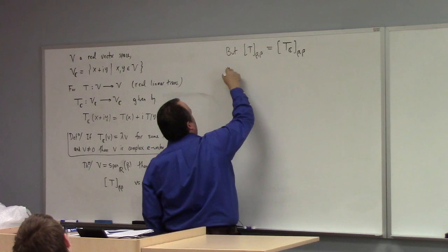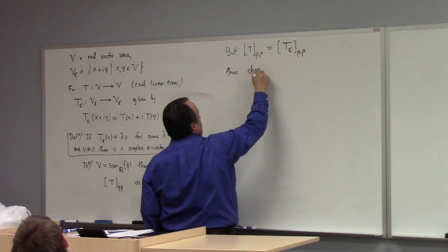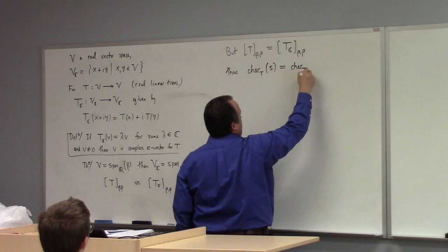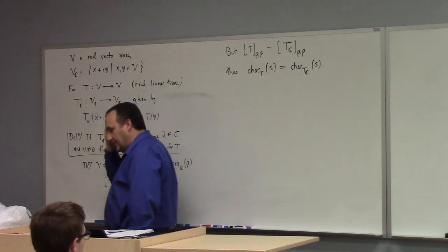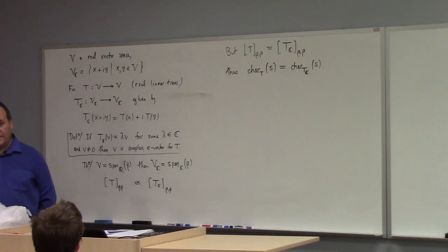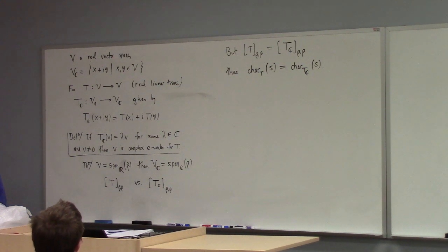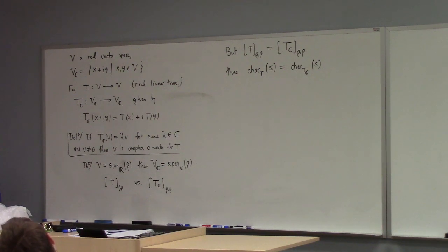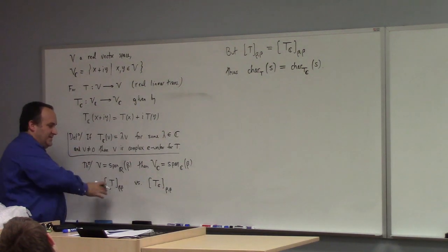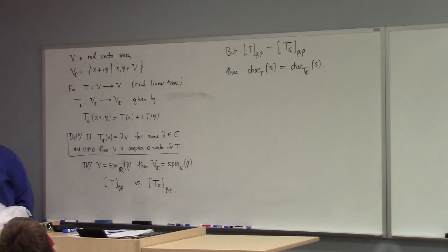T beta-beta is literally equal to the complexification of T beta-beta. So what does this mean? The characteristic polynomial of T with respect to variable S is going to be equal to the characteristic polynomial of T sub C with respect to variable S. They share the same characteristic polynomial because they share the same matrix. You can prove that characteristic polynomials are equal for similar matrices, so there's no loss of generality in pointing out that these two matrices are equal.